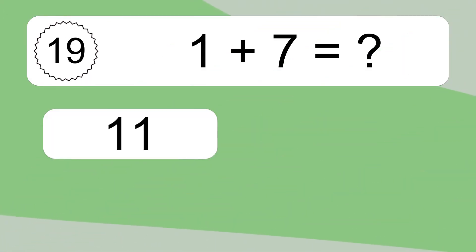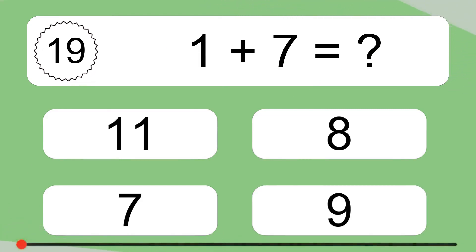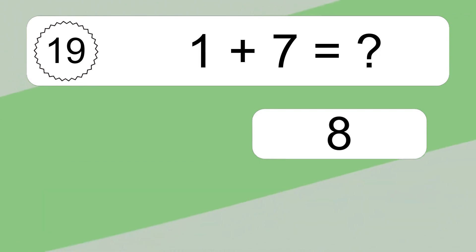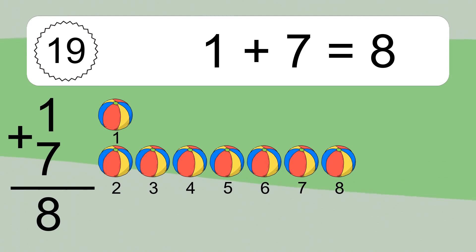1 plus 7 equals 8. Let's count it. 1, 2, 3, 4, 5, 6, 8, 9, 10, 11, 12, 13.